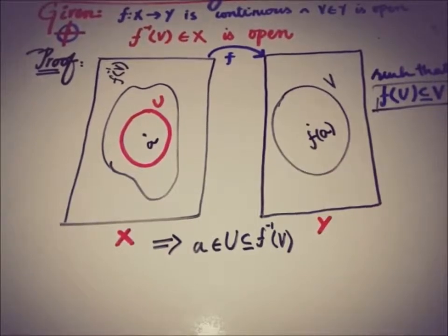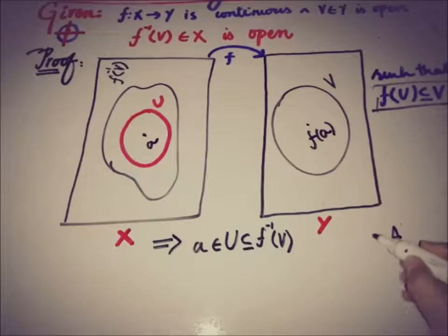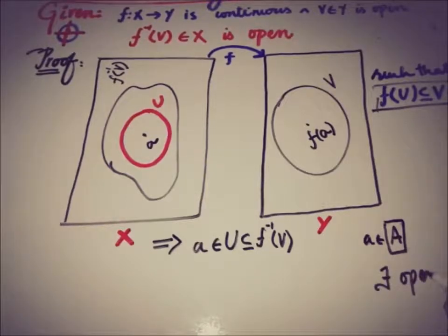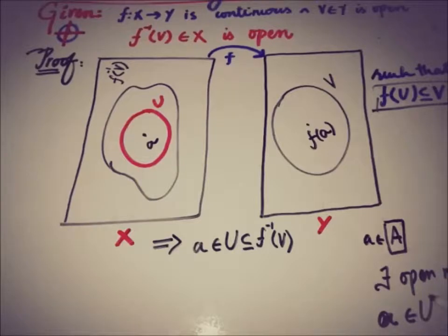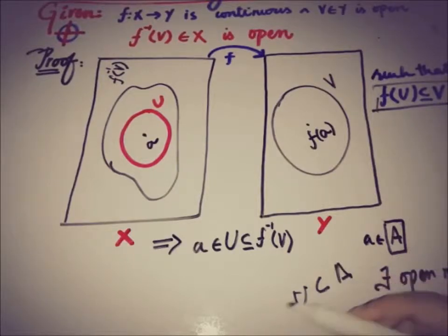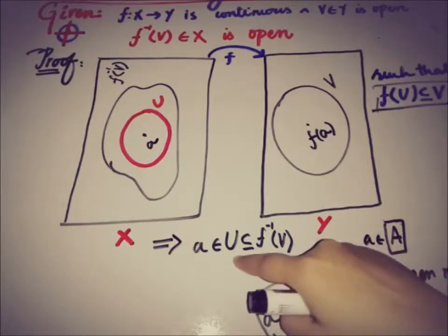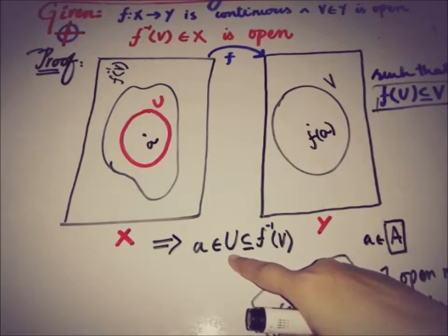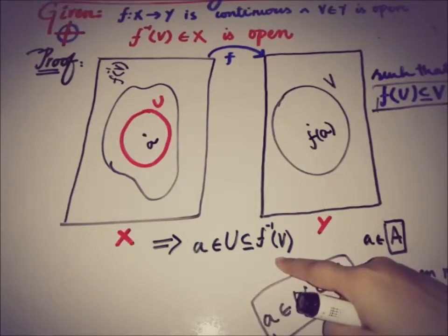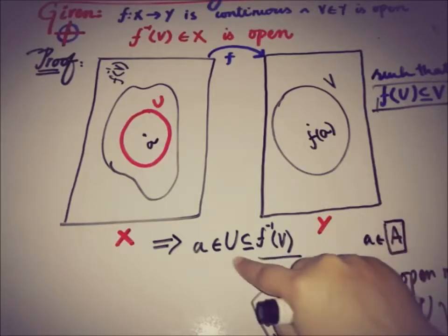Now, recalling the definition of an open set: a set A is called open if for every point a in A, there exists an open neighborhood U of a such that a belongs to U and U is a subset of A. Here we have exactly that situation: a belongs to U, U is an open set by the definition of continuity, and U is a subset of f⁻¹(V). So this implies that f⁻¹(V) is open, because it contains an open neighborhood of the point a.